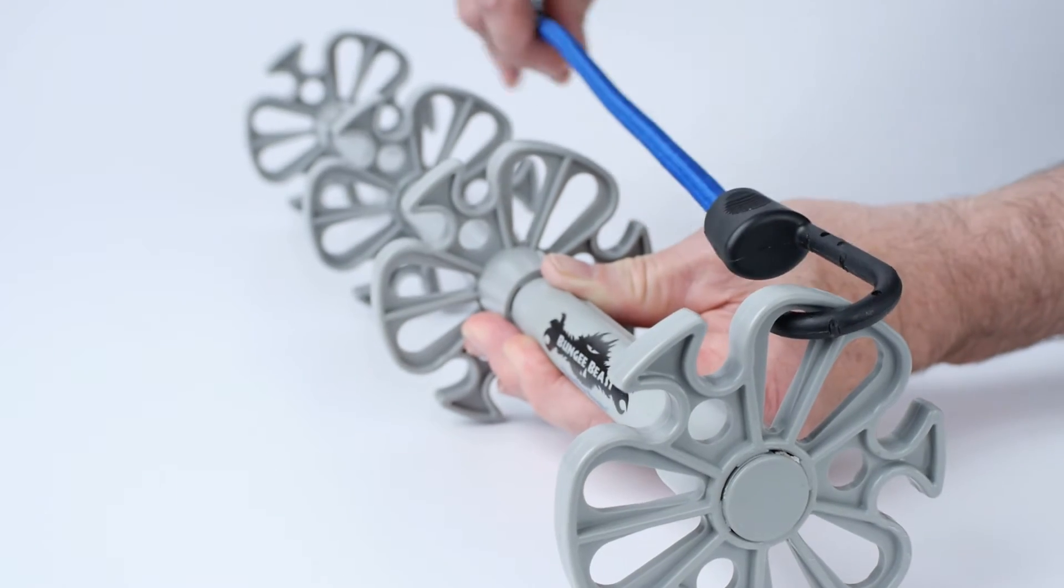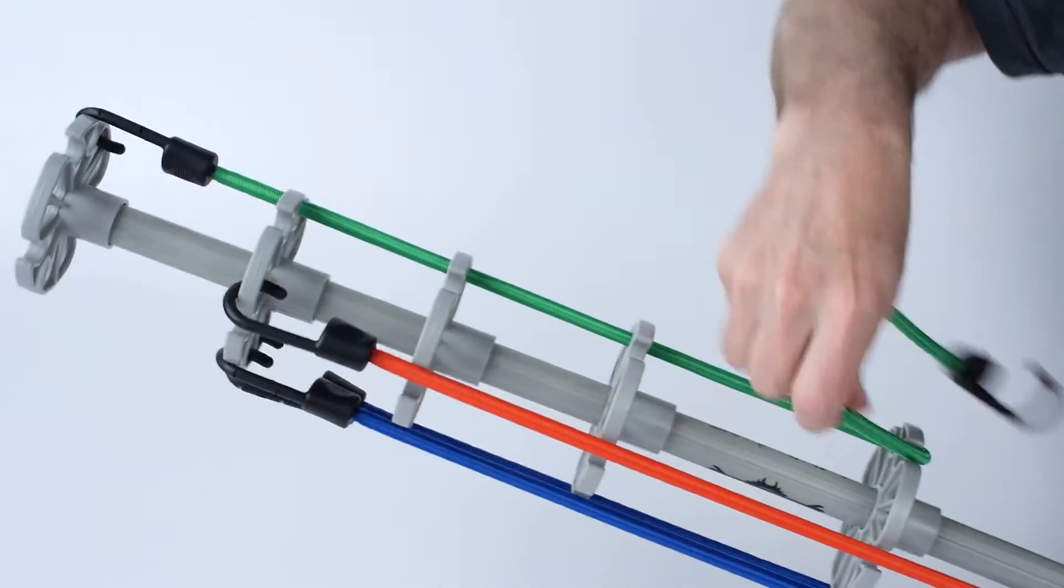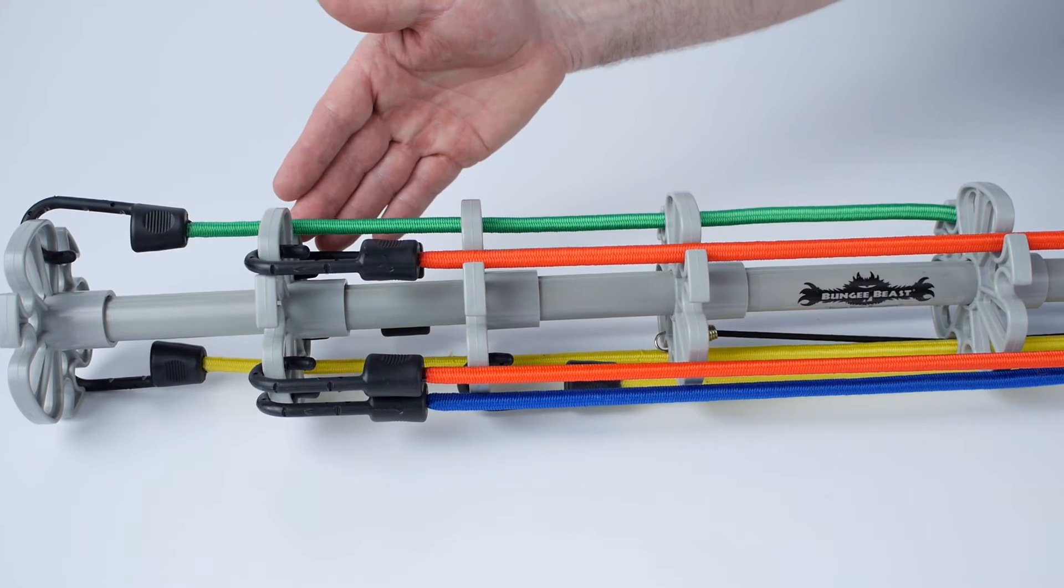Simply hook your bungee cord into one end, take it down the length and find another disc to hook it to, or if it's too long, use one of our innovative turning points to take up the extra slack and find a disc nearby to hook it to.